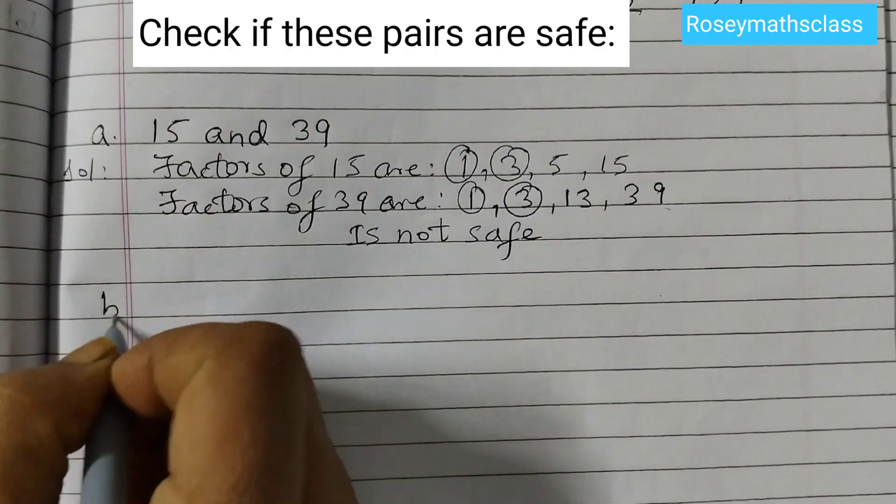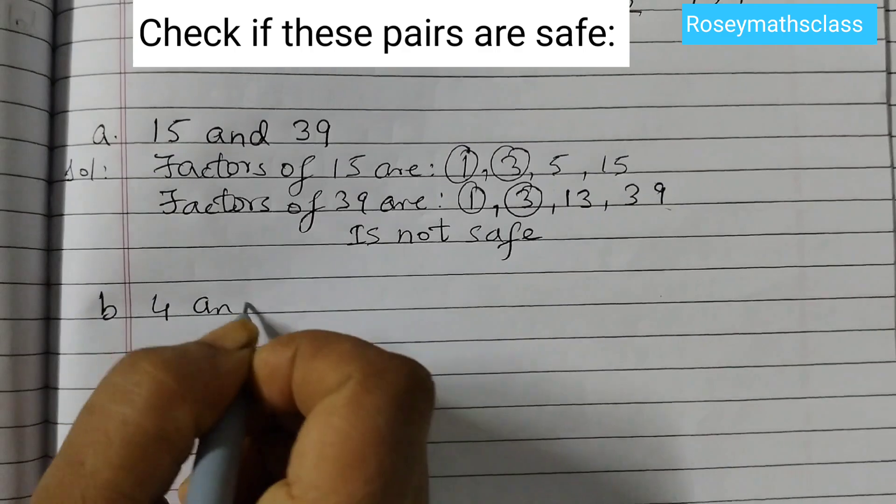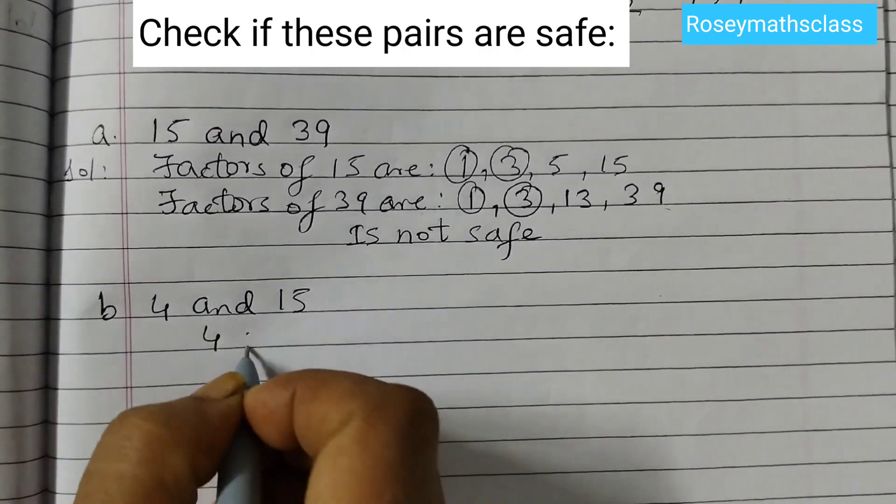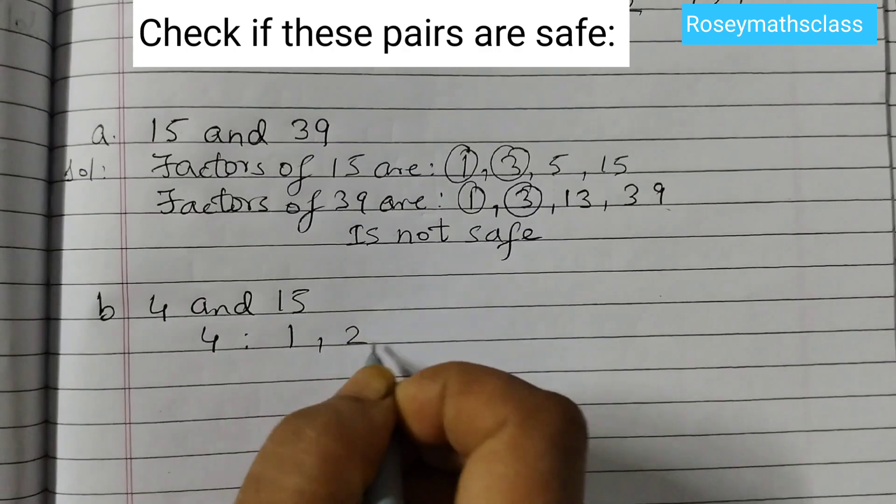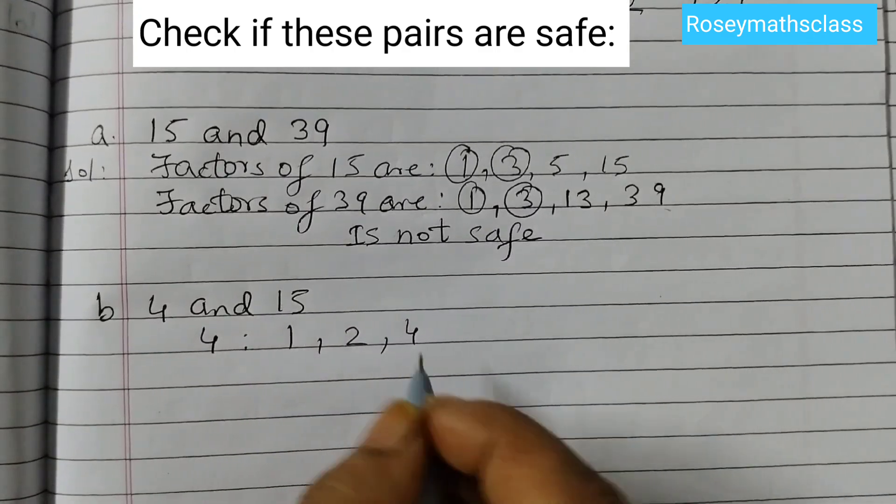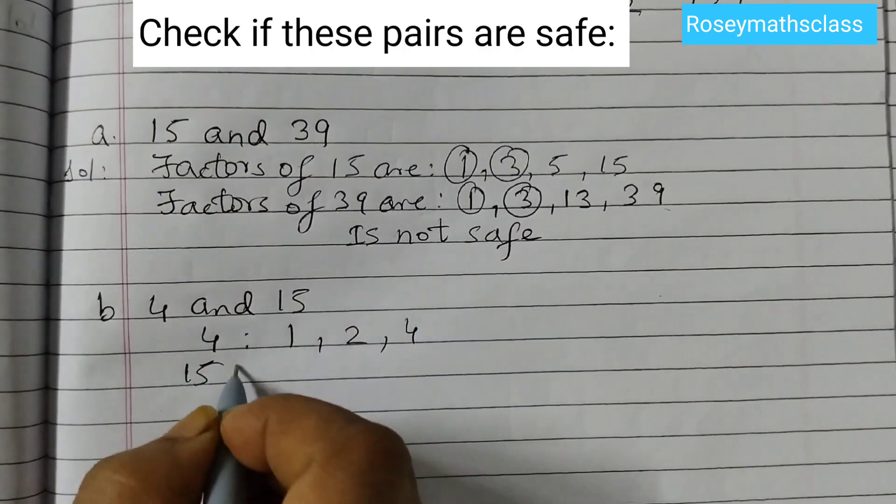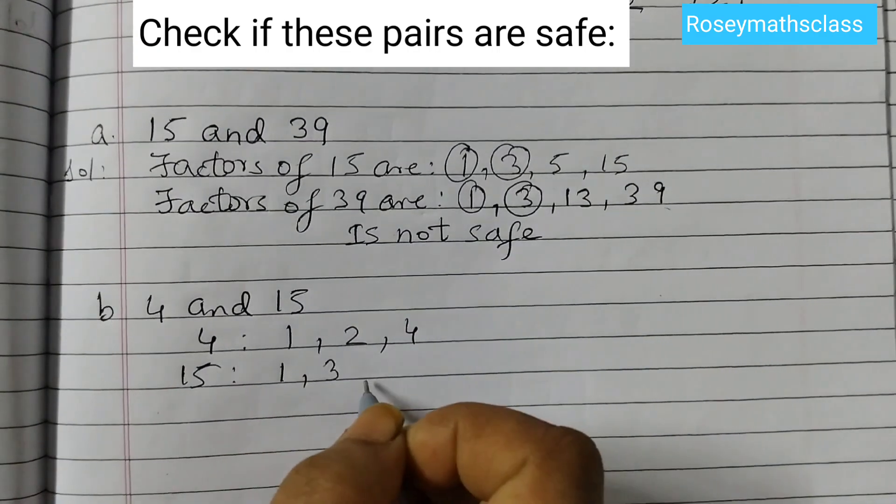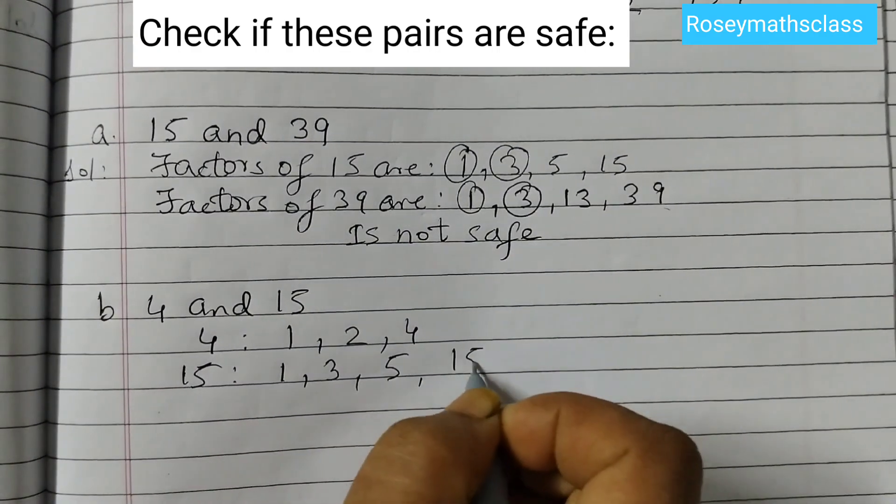Let's try the next one, B, which is 4 and 15. The factors of 4 are 1, 2, and 4—we have 3 factors. Factors of 15, you can copy from before: 1, 3, 5, and 15.